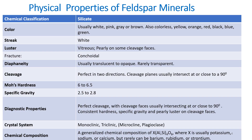Physical properties of the feldspar group of minerals: color is usually white and pink, sometimes gray or brown, and also colorless, yellow, orange, red, black, blue, and green. The streak is white and the luster is vitreous and pearly on cleavage faces. Regarding diaphaneity, these feldspar minerals are usually translucent to opaque and not very transparent, being rarely transparent as seen in the case of the quartz group of minerals.